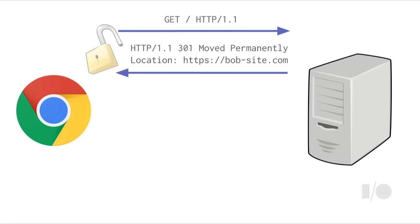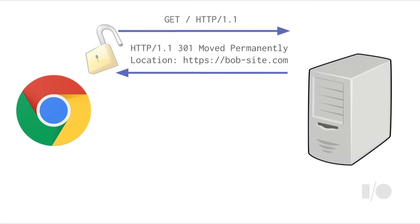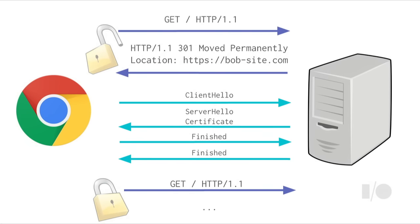Next, the browser has to actually speak HTTPS, which involves setting up a TLS connection. TLS is the underlying protocol used to set up a secure connection for HTTPS. These two round trips are part of the TLS handshake. The client says it wants to speak TLS; the server says it can, sends its certificate — the cryptographic proof of identity. The client validates the certificate, they agree on cryptographic parameters, and then both parties confirm they're ready. Then the browser can actually send the HTTPS request. So two round trips are needed to set up a TLS connection before the browser can send the request over this secure connection.